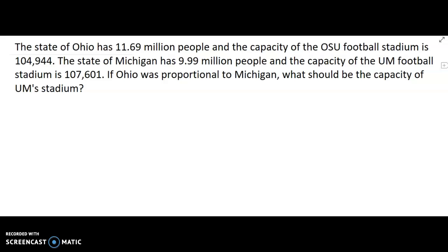Let me frame this up. All four pieces of information are given, but the question is the what-if when comparing — asking if the capacity of the football stadium was proportional to the population of the state. Ohio has almost 2 million more people than Michigan, yet Michigan's football stadium is bigger. So if it was proportional, if Ohio has more people, then the football stadium should hold more people — meaning Michigan's stadium should be smaller.